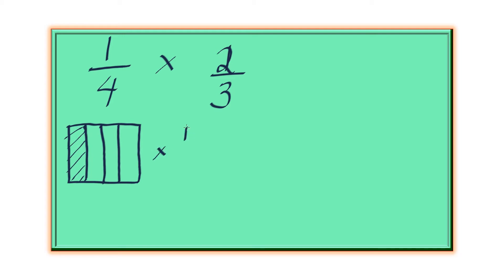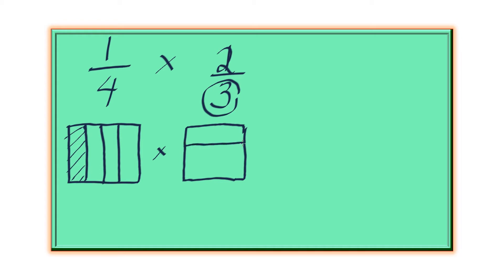This second fraction — we're going to draw another square, same size, congruent to that first square. This time we're going to divide the square into 3 parts, 3 sections. But instead of doing it vertically, we're going to do it horizontally. So we divide it into 3 sections horizontally.